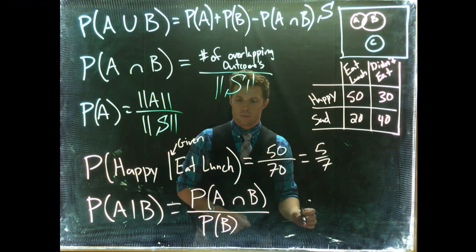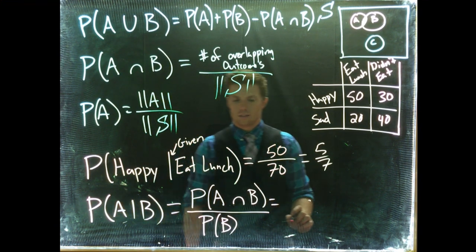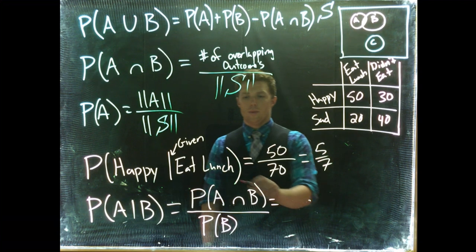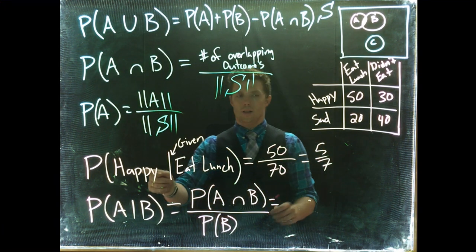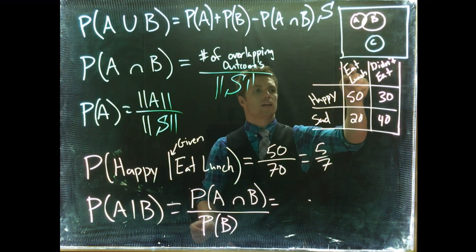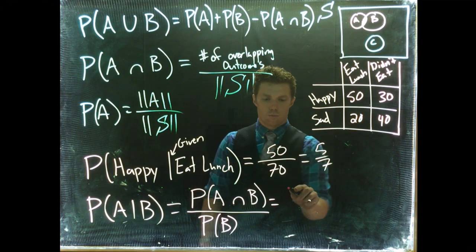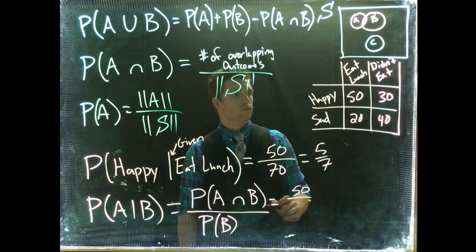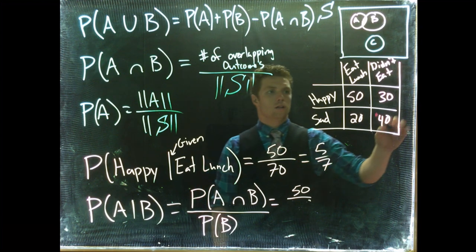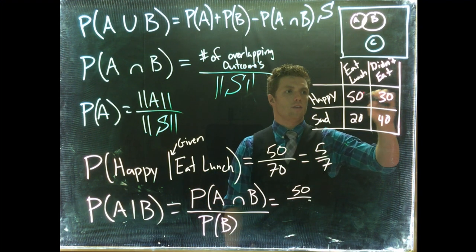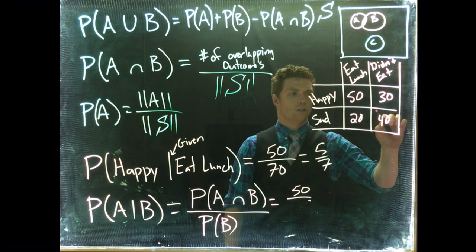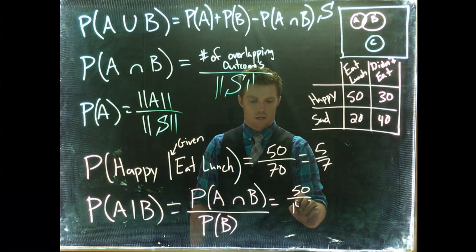So let's do our eat lunch example again. What we can do is we can say equals the probability of A intersect B, or the probability of happy intersecting eating lunch. So that would be our 50 divided by our sample space. So we'd have to add up everything: 50, 30, 80, 20, 100, 140.